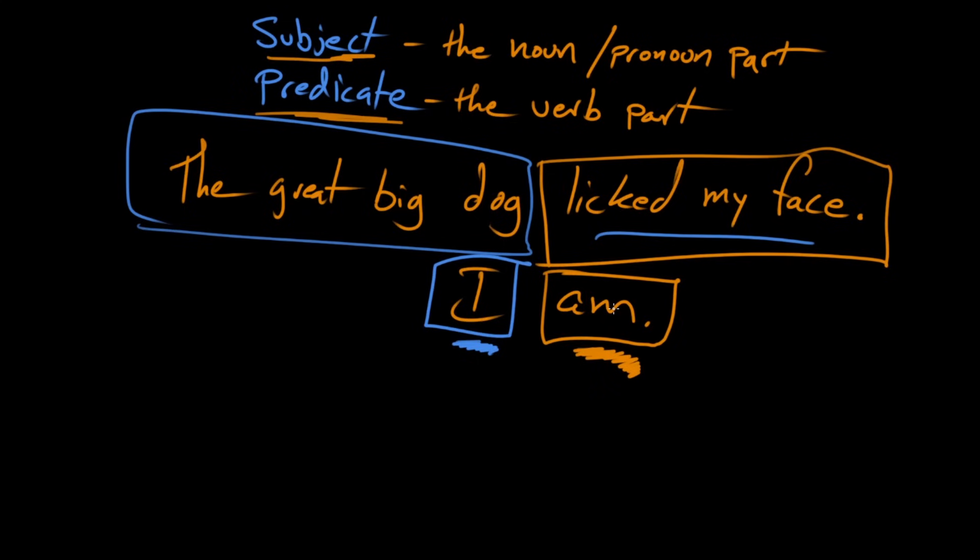So this is the noun or pronoun part. And this is the action that it is performing. Although am or being isn't really an action. It's more of a linking verb. Sure. But it's still a verb. That's right. Okay. So this is the predicate then, for sure. Yeah.